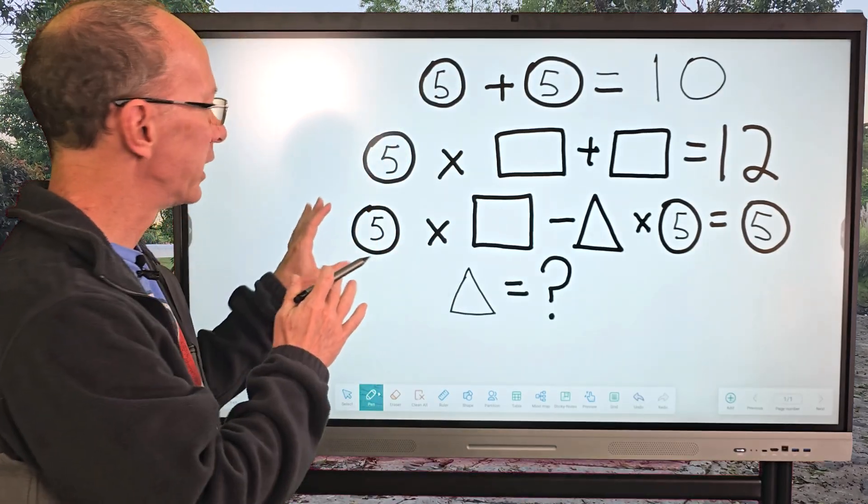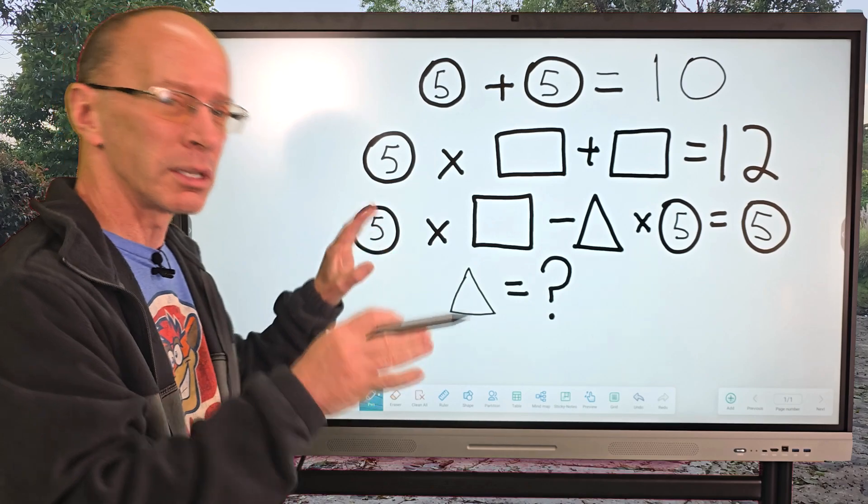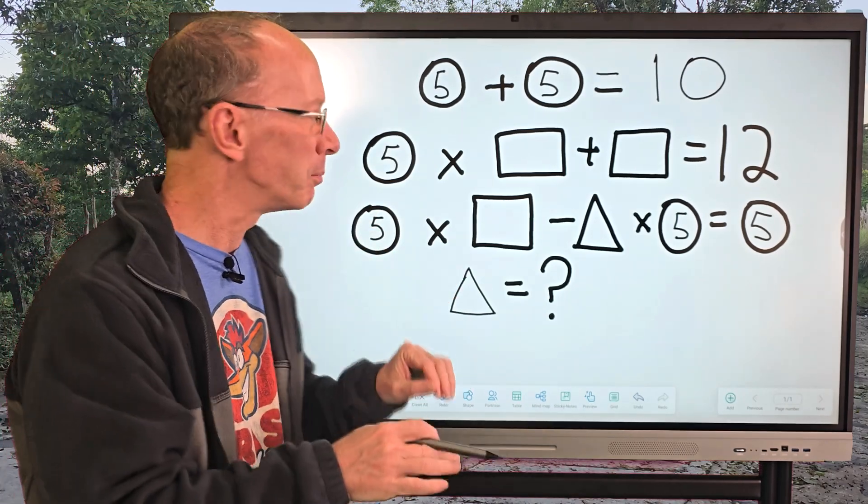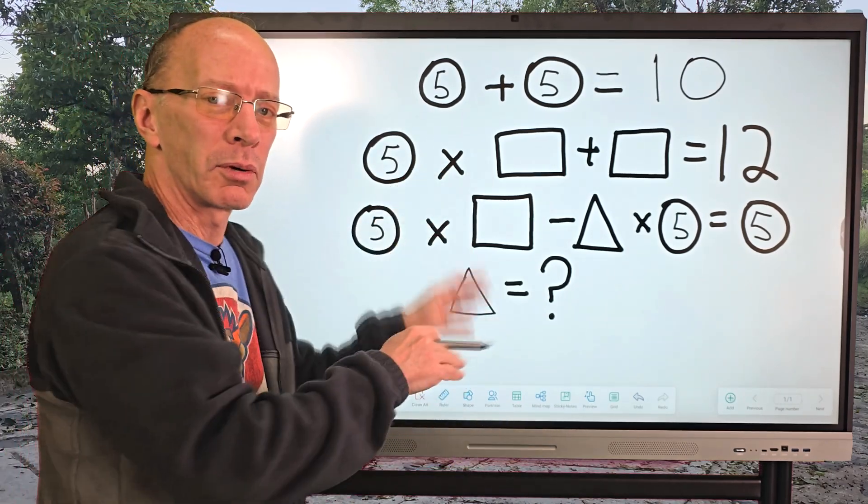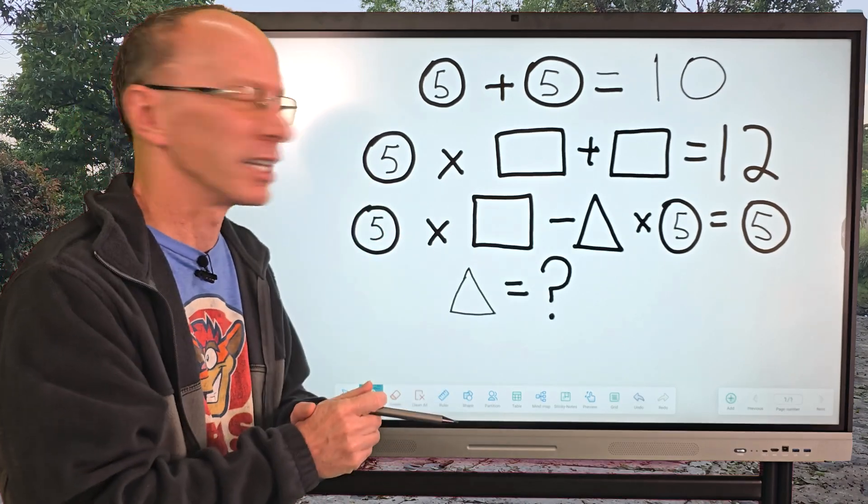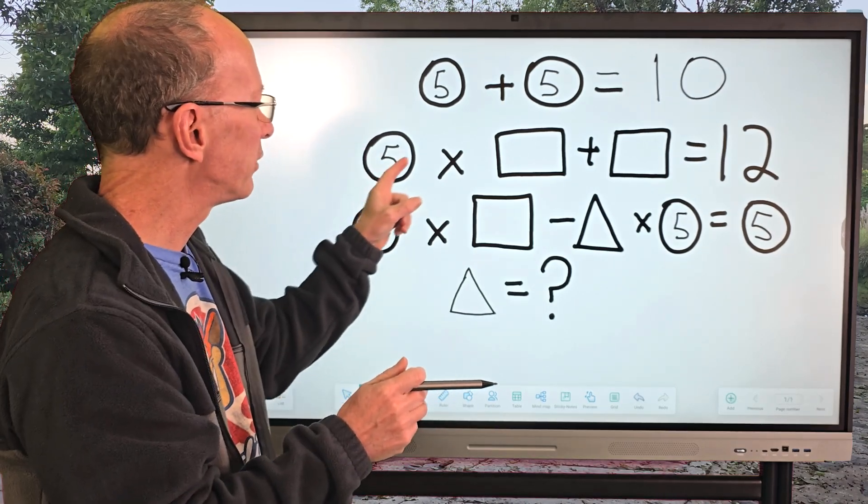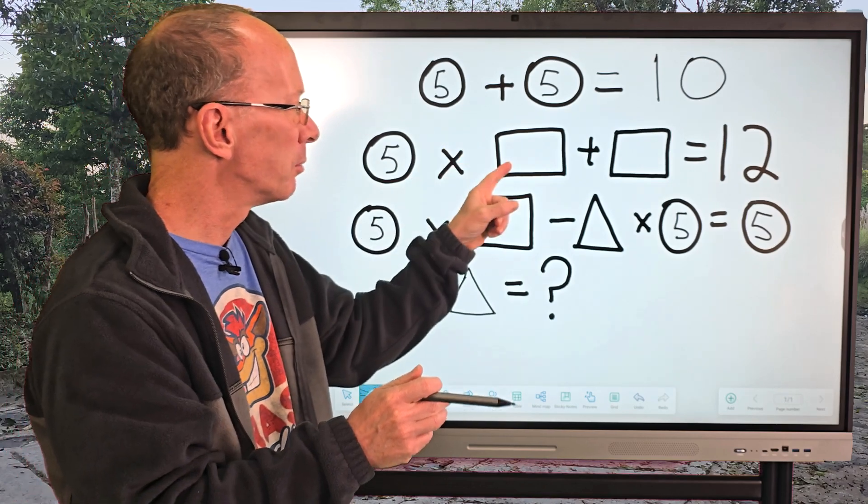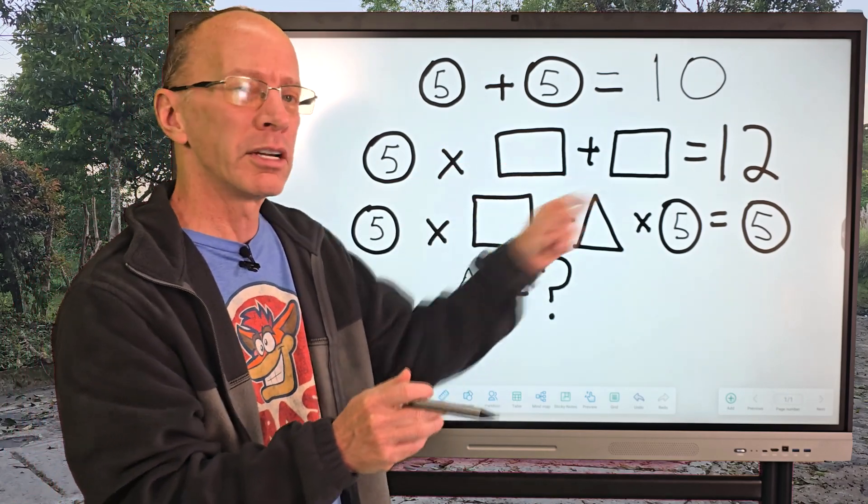All right, let's go ahead and do our next line right here. So sometimes when you're doing these challenging math puzzles, you might have to skip around a little bit, but I think we can do the second line. So I have five times a number plus that same number equals 12.